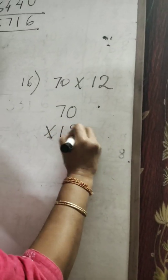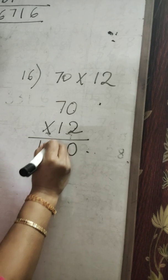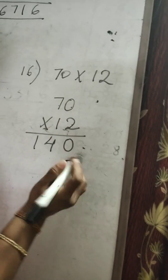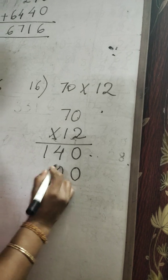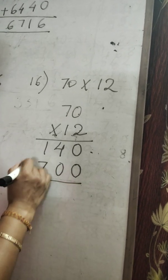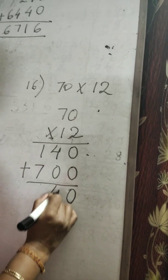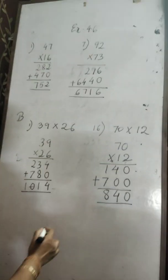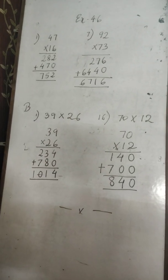In the next example, 17 into 12: 2 zeros are 0, 2 sevens are 14. For the second digit, leave the first place — put 0 or a cross. 1 zero is 0, 1 seven is 7. Now add: 0 plus 0 is 0, 4 plus 0 is 4, 7 plus 1 is 8. This is the answer. Today I am stopping here. Next class I will return with division.